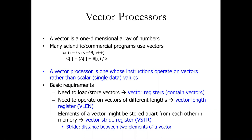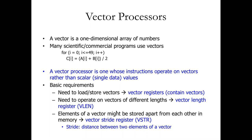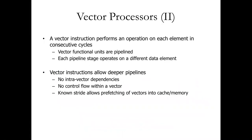The idea here is we have an array of data we want to process, and we have a few different things we need to do: we need to load everything in, we need to know how much data there is, and we need to specify how far apart the various data elements are from one another. Each of these is accommodated by vector registers, the vector length register, and the stride register respectively.